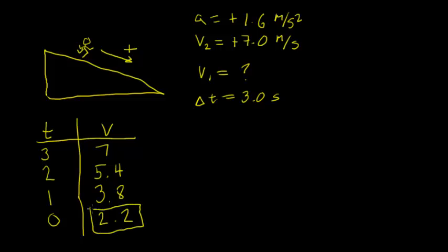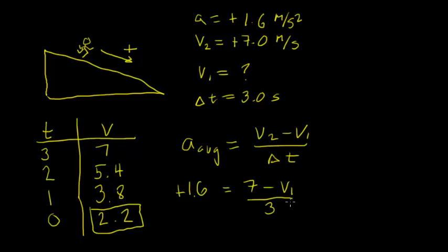Now, if you're more comfortable using an equation, we can do that. We have a formula for average acceleration, and we know that's the change in velocity divided by the change in time. We have all the information except for that initial velocity. So the average acceleration, given to us, is 1.6 positive, and that equals 7 minus V1 all over 3.